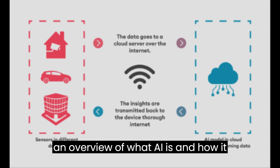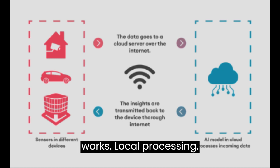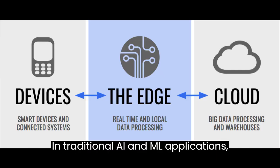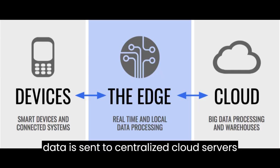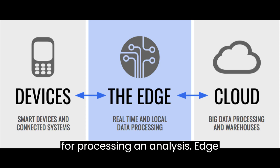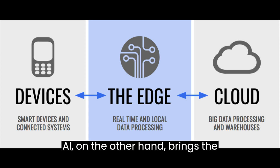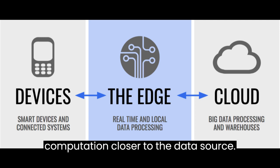Here's an overview of what Edge AI is and how it works. In terms of local processing, in traditional AI and ML applications, data is sent to centralized cloud servers for processing and analysis. Edge AI, on the other hand, brings the computation closer to the data source.